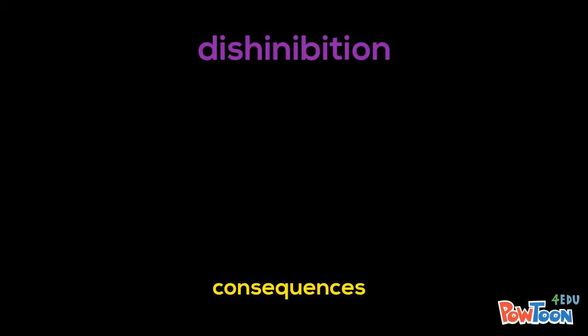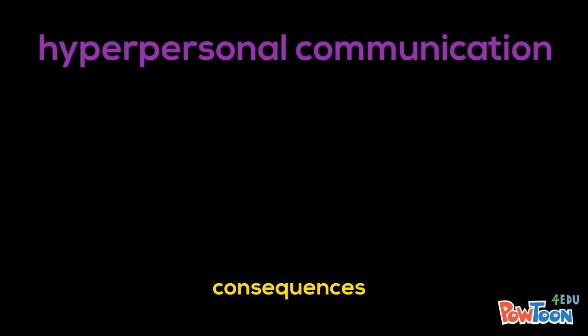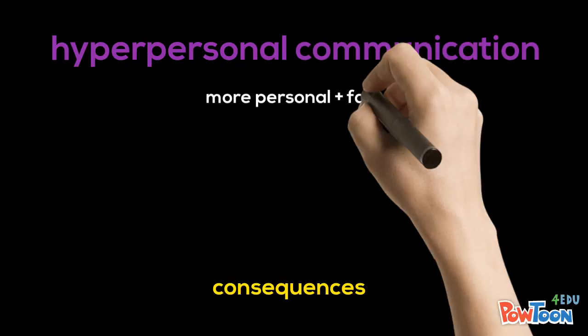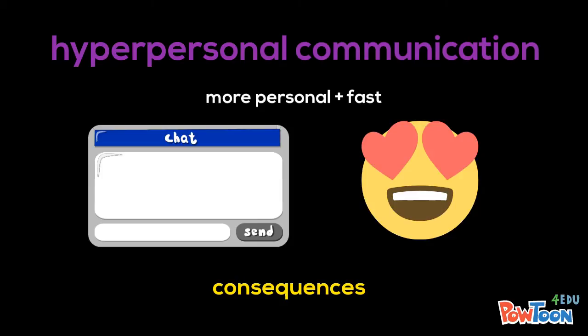Now that you have a firm understanding of what mediated communication is, let's talk about some of its consequences. Mediated communication leads to disinhibition, meaning people are usually more honest and blunt in what they say — it would typically be easier to tell your crush you like them via phone or text instead of face-to-face. Mediated communication also leads to hyper-personal communication, which means that conversations can get really personal really fast, like people that meet online and talk about anything and everything and fall in love within a week.